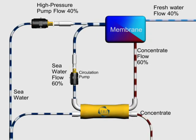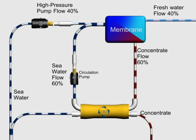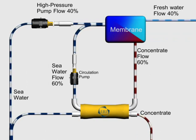ERI's PX Pressure Exchanger recovers nearly all of the energy from the membrane reject stream and feeds it back to the SWRO process. Using just the energy in the reject concentrate, the PX pressurizes new seawater for the membranes, reducing the high pressure pump flow requirements.